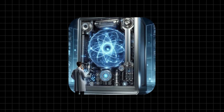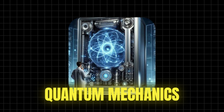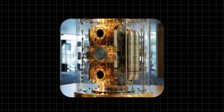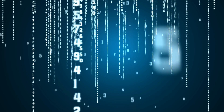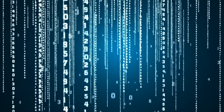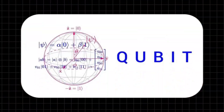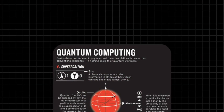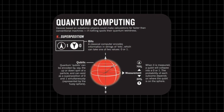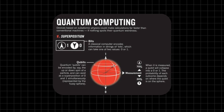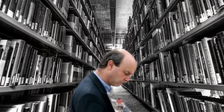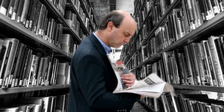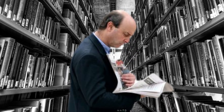Quantum computing leverages the principles of quantum mechanics to process information in ways that classical computers simply can't. It's like comparing a flashlight to a laser beam. Unlike classical bits, which represent either a zero or a one, quantum bits, or qubits, can exist in multiple states simultaneously thanks to a phenomenon called superposition. This allows quantum computers to perform many calculations at once, vastly increasing their computational power. Think of it as having the ability to read every book in a library simultaneously, rather than one at a time.